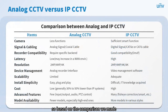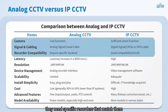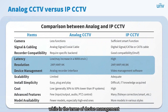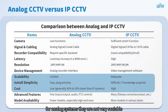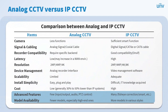To summarize the main comparison points: analog cameras have fewer functions, use different signals and cables, and need specific matching recorders, while IP cameras can work with different recorders. Analog CCTV has lower resolution but lower latency, while IP CCTV is much more convenient in terms of device management. Analog systems are not very scalable, while IP CCTV systems are more scalable. However, analog systems are easier to install and cheaper. IP systems have many advanced features, while analog systems have only a few.